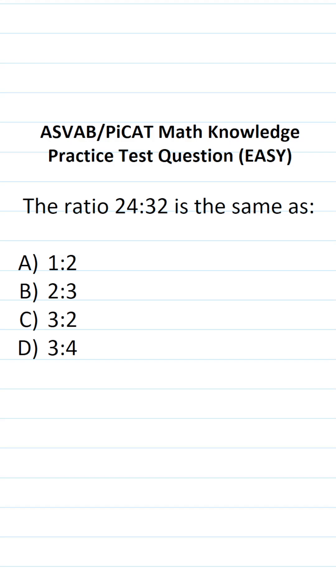So again, on the ASVAB and PiCAT, you're not given a reference sheet or a calculator. In this case, we're being asked to simplify the ratio 24 to 32.